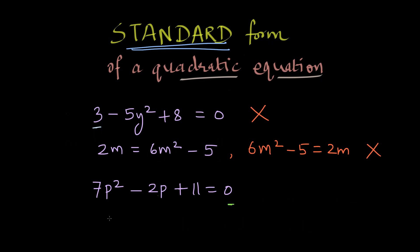Now what about the last one? We see 7p² - 2p + 11 = 0. Right hand side is 0, and on the left hand side where we have the expression, the quadratic expression, the degree of the first term is 2, second term is 1, and then we have the degree 0. And that's why this equation is in the standard form.